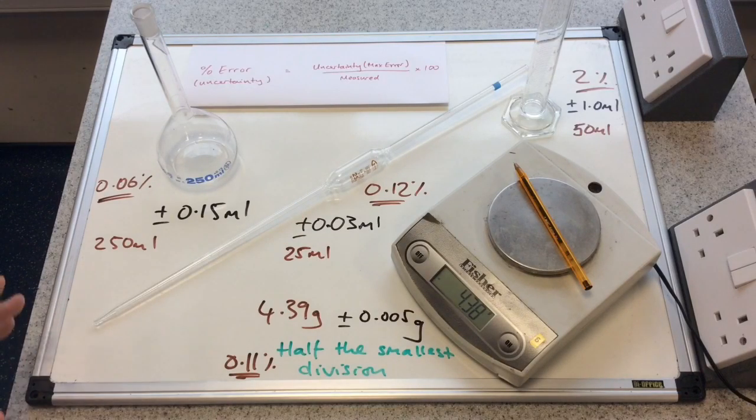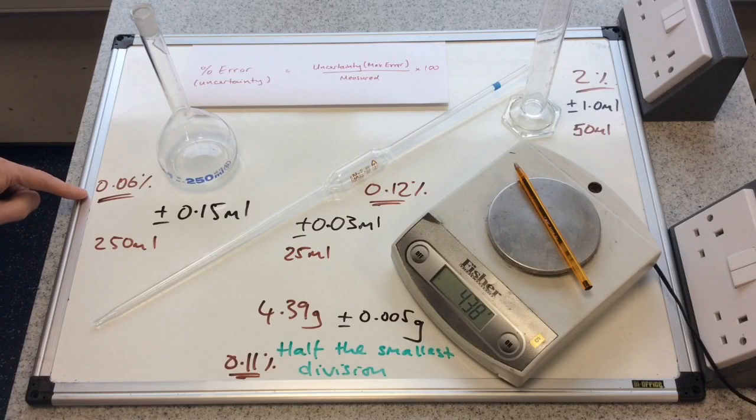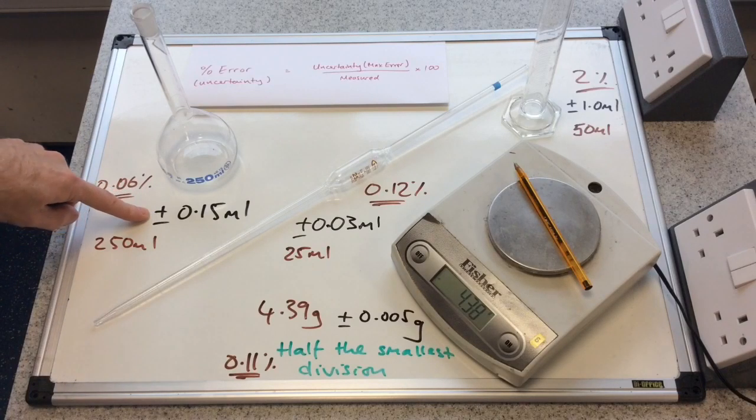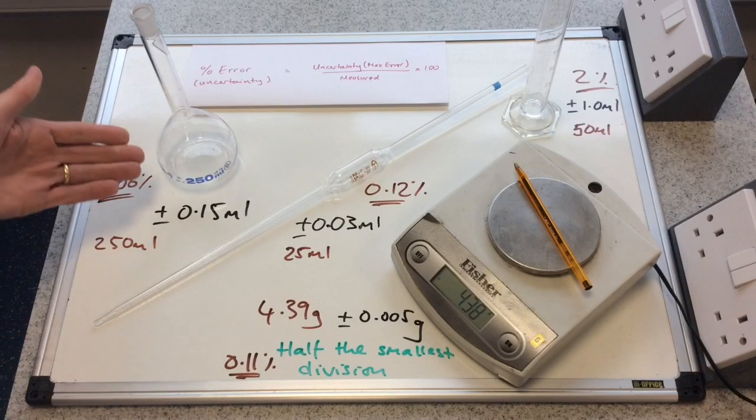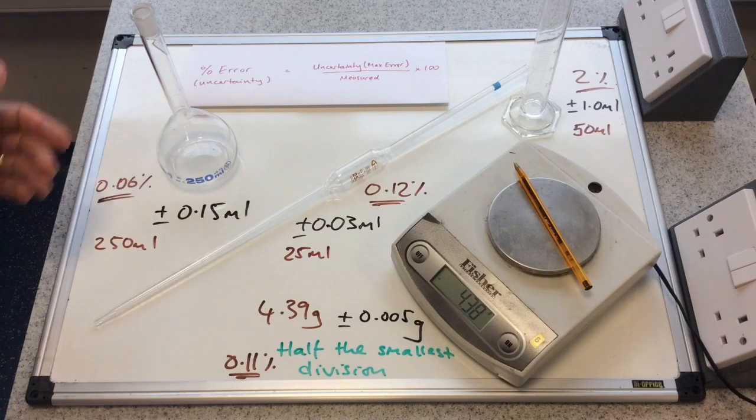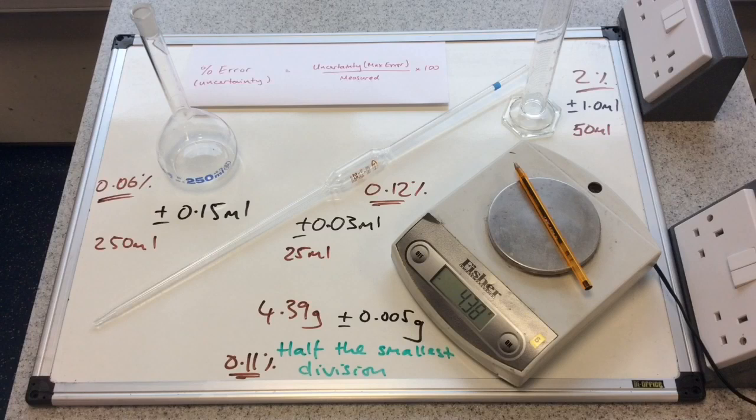So we'll just pick one of them. All I did, say, for this one, so we do the uncertainty or the error divided by the amount measured. This measures a fixed volume of 250 multiplied by 100.